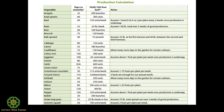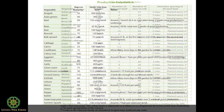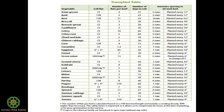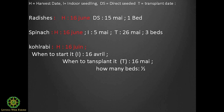With these yield charts we can calculate the number of beds we need to hit our target of 200 shares per week. For example, if I want radishes for June 16th: radishes are 30 days, so I need to seed them by May 15th. The chart shows 300 bunches per bed, so I need at least one bed. You go through all the crops you've predetermined for every week and get these numbers.